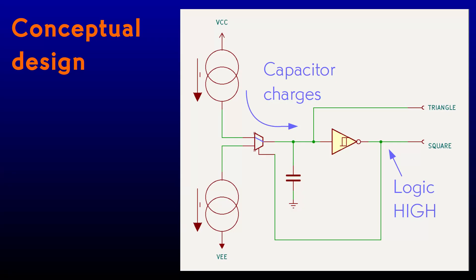If the control signal is a logic high, then the switch connects to the upper current source, and the capacitor charges at a constant rate. If the control signal is a logic low, then the switch connects to the lower current source, and the capacitor discharges at a constant rate.